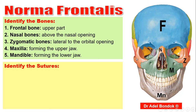Regarding the frontal bone, it forms the roof of the orbit — this is the orbital plate. It has a maxillary process and a zygomatic process. Regarding the zygomatic bone, it has a frontal process and a maxillary process. Regarding the maxilla, it has a frontal process articulating with the frontal bone, a zygomatic process articulating with the zygomatic bone, and the alveolar process, forming with the opposite one the alveolar arch.